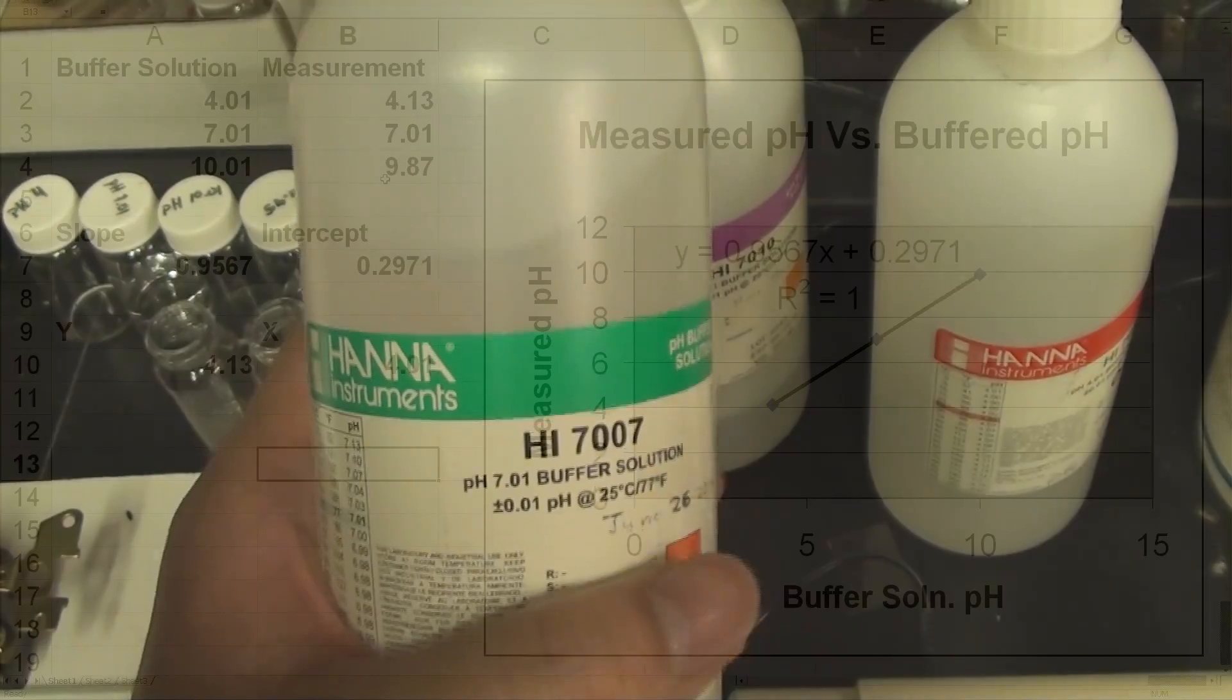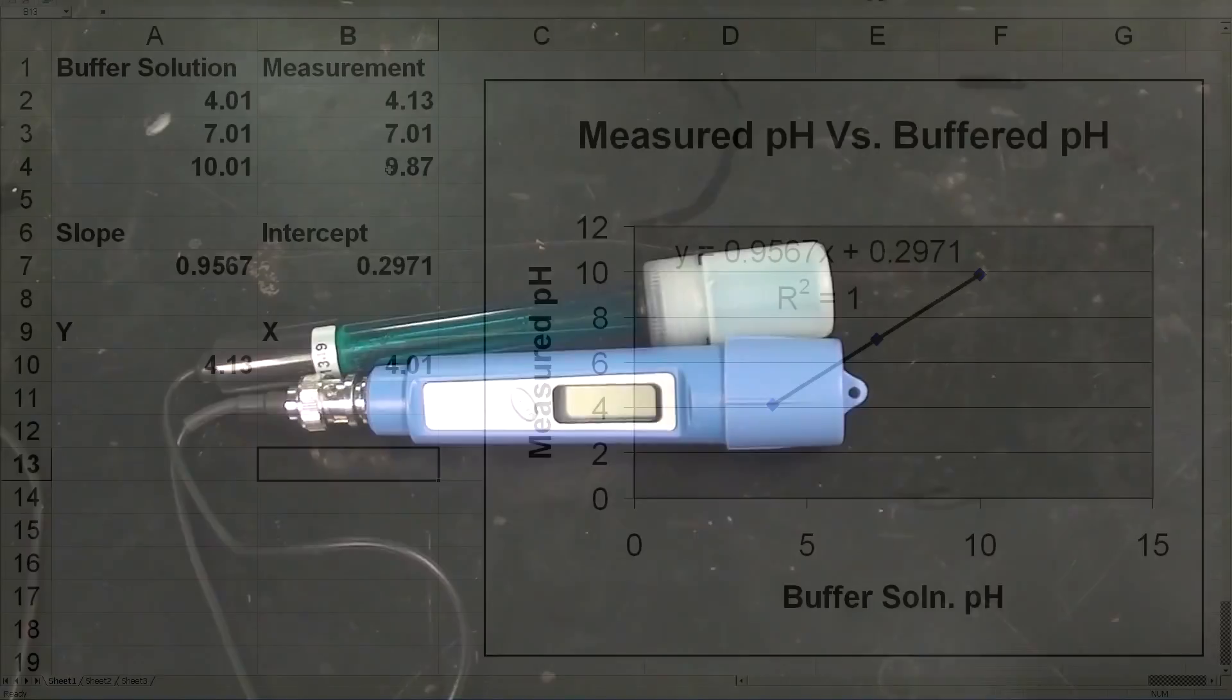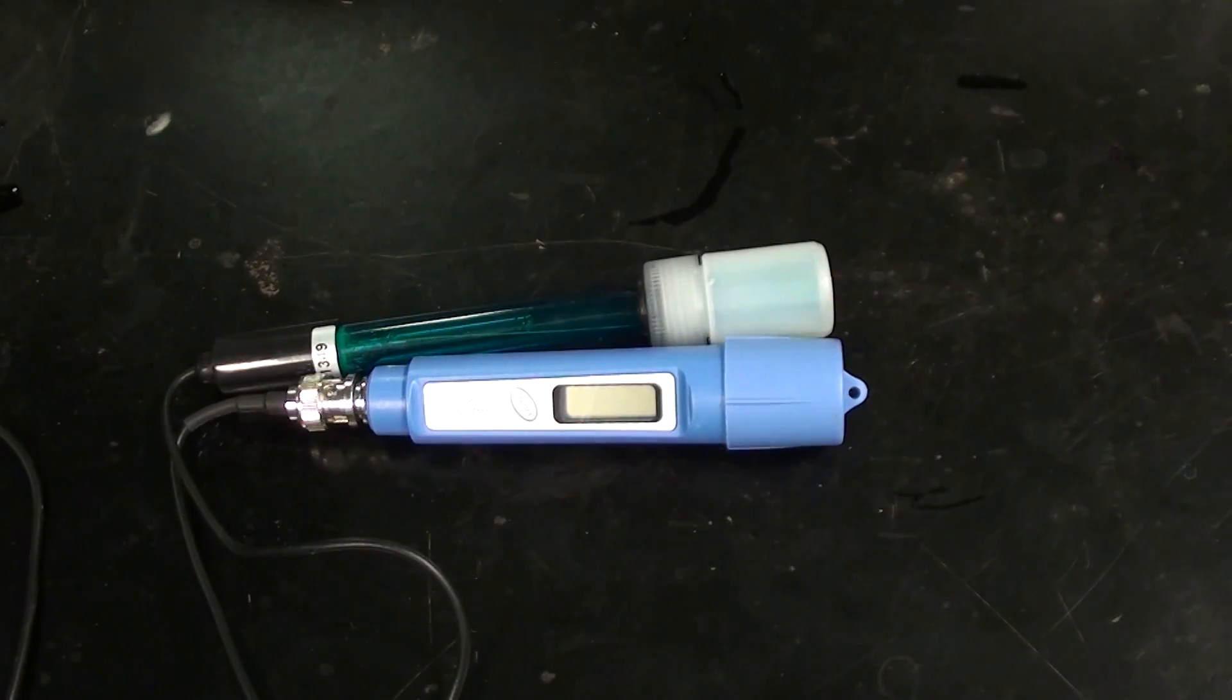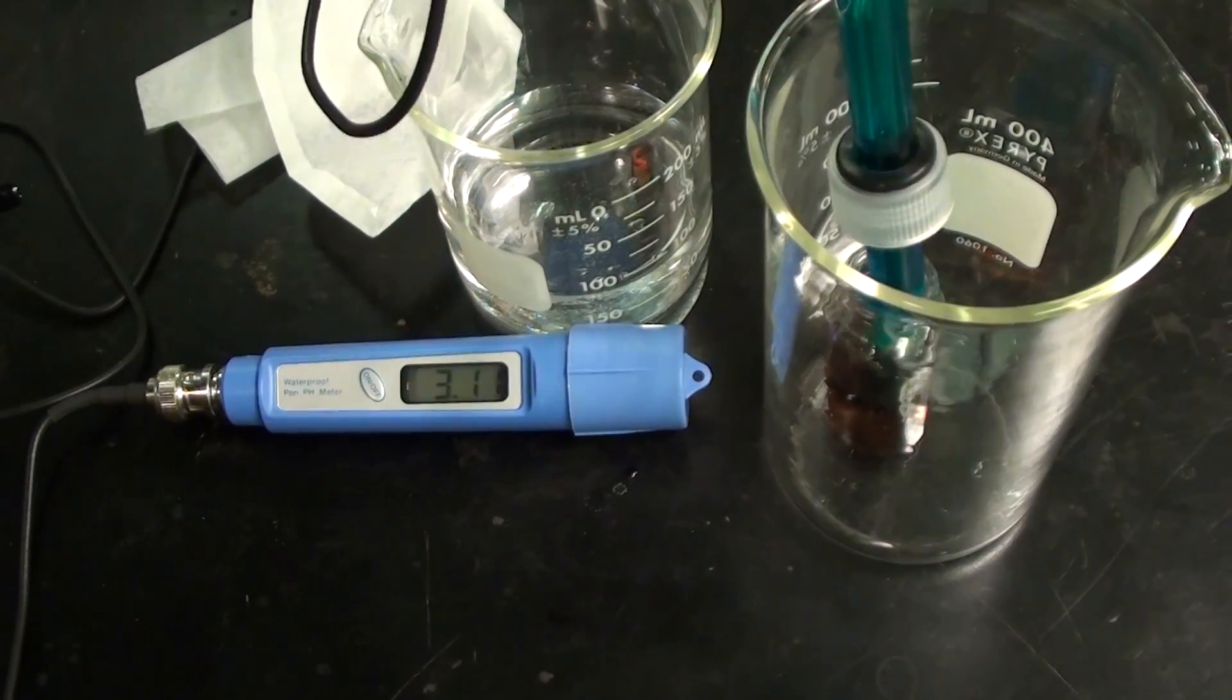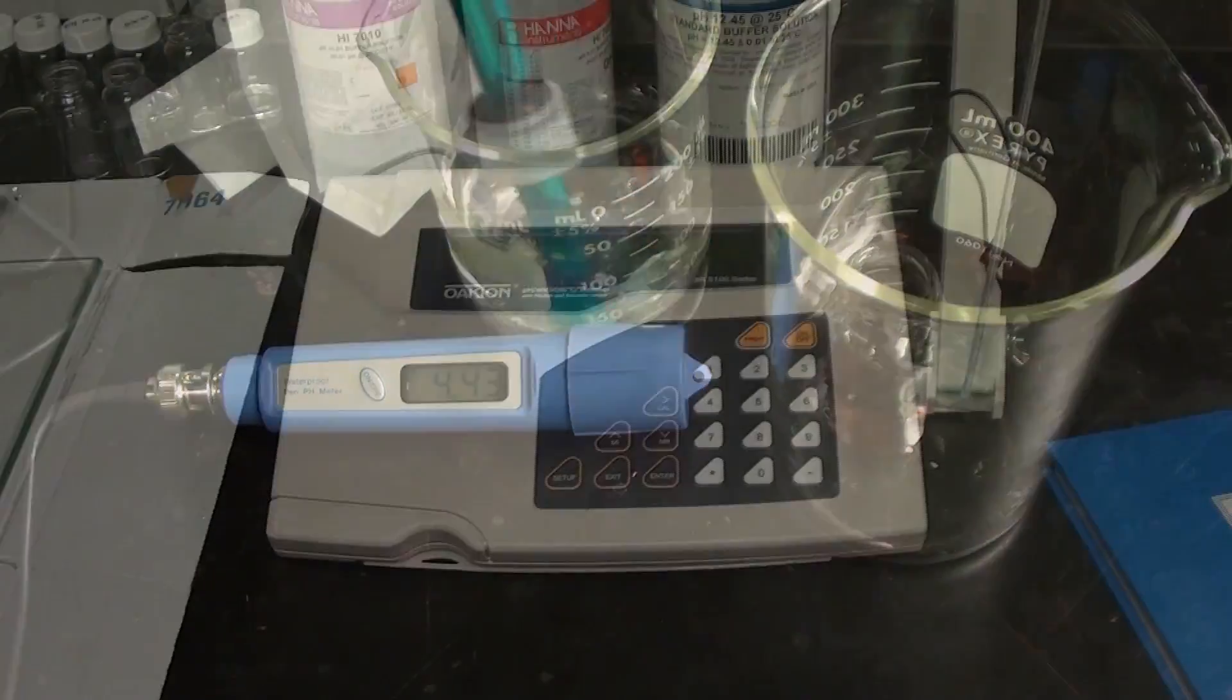Nonetheless, with some buffer solutions, a spreadsheet and some thought, we've turned a $40 pH meter and electrode we got off eBay into a usable analytical tool that can compete with a several hundred dollar model.